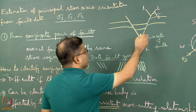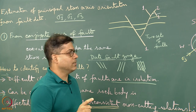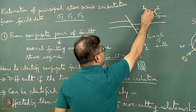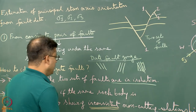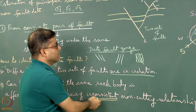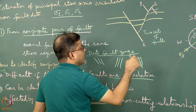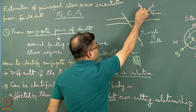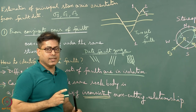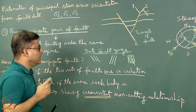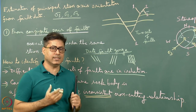One observation is that fault 2 gets terminated across fault 1. But elsewhere in the same exposure, fault 1 gets terminated across fault 2. This inconsistency — fault 2 terminating at fault 1 in one place, and fault 1 terminating at fault 2 in another — indicates that fault 1 and fault 2 were co-eval and happened together under the same stress regime.